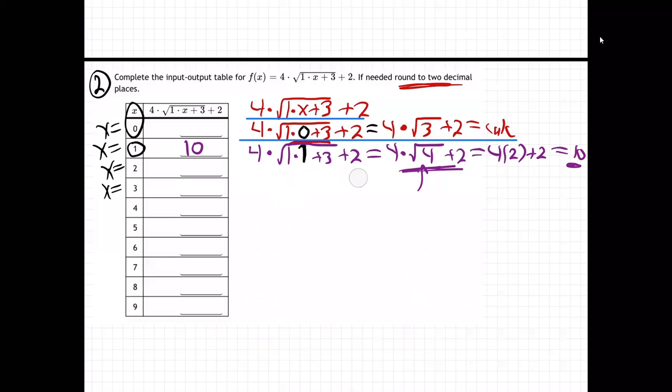So the next one is going to be 4 times the square root of 1 times x plus 3 with the plus 2 at the back. When we plug it in this time, x is 2, like that. And so we'll work this out. The whole inside here, 1 times 2 plus 3, that's 2 plus 3 is 5.